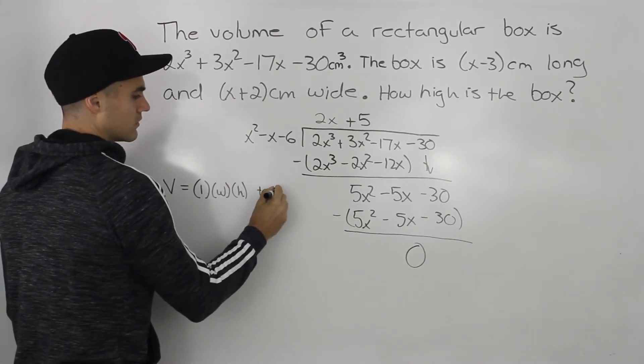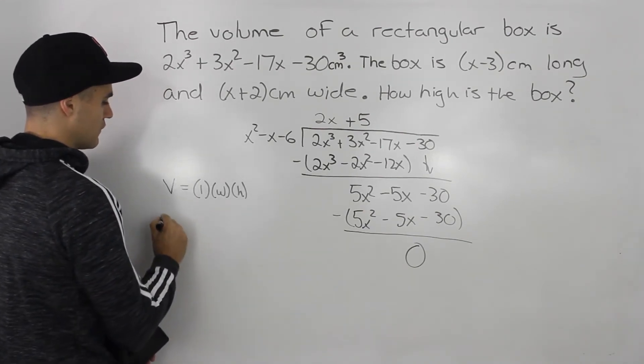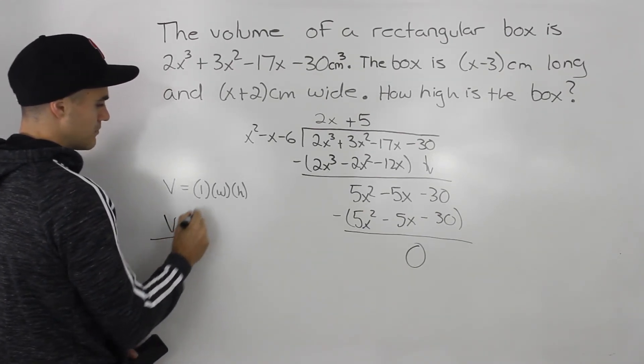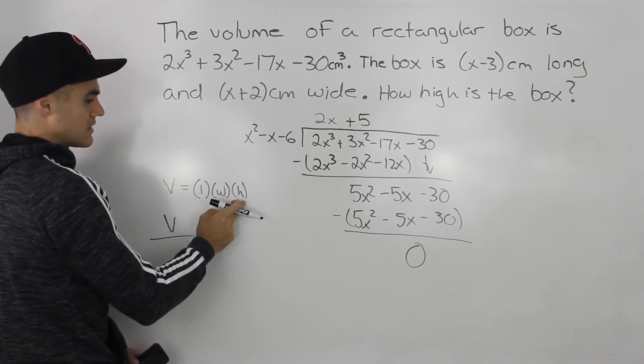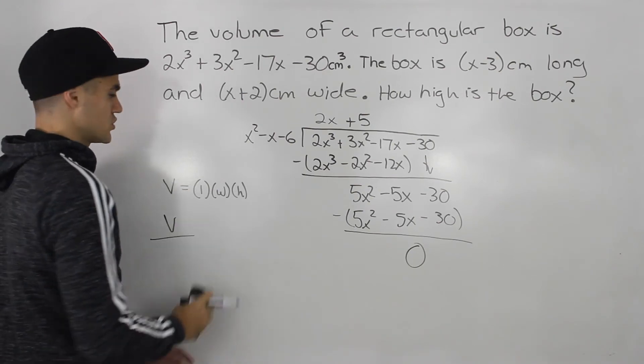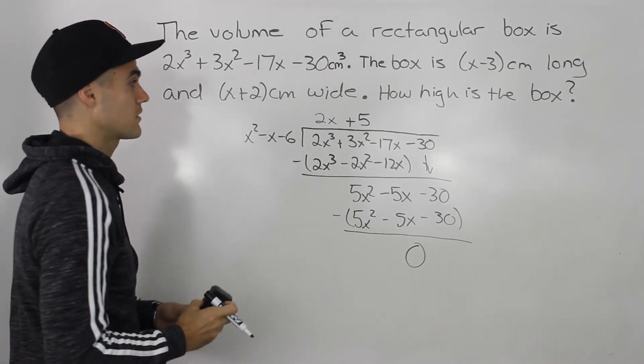There is no remainder here that happens. So when you take a volume and divide it by either the length times the width or the length times the height or the width times the height, it should always be a smooth division. You should always get a remainder of 0. And if you don't, then you know you did something wrong.